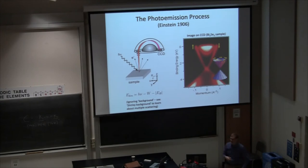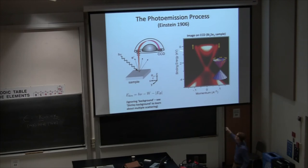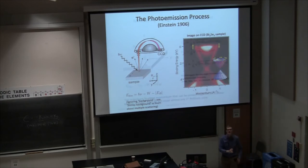Regarding photon energy: we keep it constant for one measurement because if we changed it during the measurement, the bands would get really broad — if I change the energy by 1 eV, all these features move up by 1 eV. But something else also happens: I change the momentum that I'm probing. So let's move on to that.